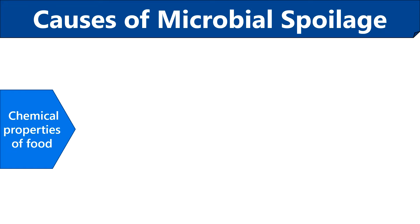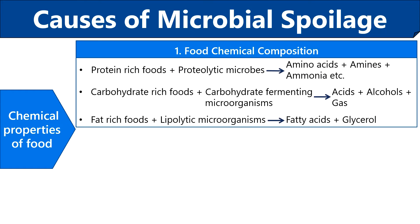The chemical properties of food, like food composition, pH and moisture content, are the internal factors influencing microbial spoilage. Proteolytic microbes degrade protein-rich foods through protease enzymatic activity and produce amino acids, amines and ammonia. Carbohydrate-fermenting microbes like some yeast, molds and bacteria break down carbohydrate-rich foods and produce acid, alcohol and gas. Lipolytic microorganisms degrade lipid or fat-rich foods to produce fatty acids and glycerol, and they include some molds and gram-negative bacteria.